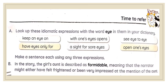Look up these idiomatic expressions with the word 'eye' in them in your dictionary: keep an eye on, have eyes only for, with one's eyes open, a sight for sore eyes, see eye to eye, open one's eyes. Search their meanings in your dictionary and then use them in sentences of your own.